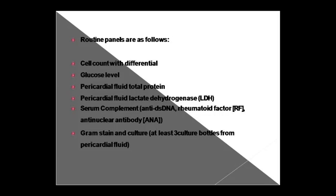The routine panel includes cell count with TLC (total leukocyte count) and DLC (differential leukocyte count). Glucose level can be checked using the benedict test. Total protein can be assessed using the estic acid test and nitric acid test. In pericardial fluid, you can also check LDH, serum complement, anti-double-stranded DNA, RF (rheumatoid factor), and ANA (anti-nuclear antibody).